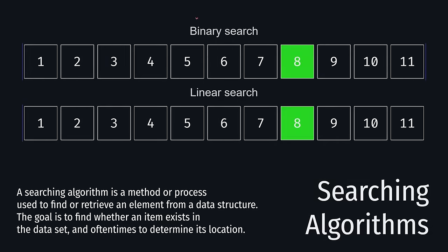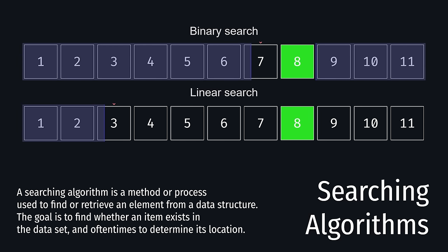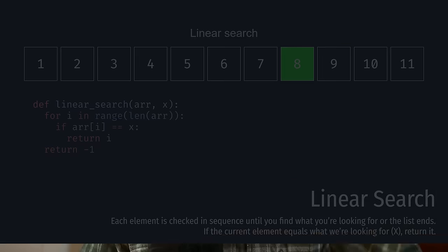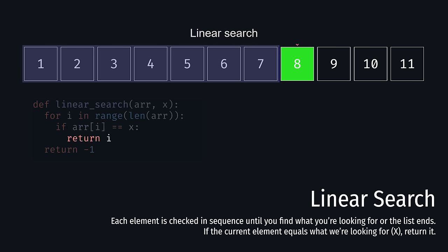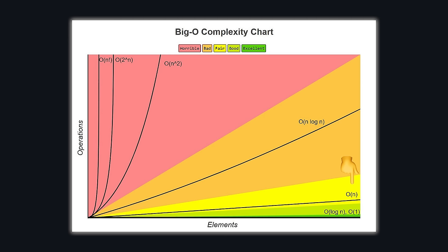Searching algorithms. A searching algorithm is a method or process used to find or retrieve an element from a data structure. The goal is to find whether an item exists in the data set, and oftentimes to determine its location. It's akin to opening the yellow pages to look for a specific phone number — but you have to do it thousands of times, so you better make sure your searching algorithm is correct. One way to do it is via a sequential search algorithm like linear search, which is exactly what it sounds like: each element is checked in sequence until you find what you're looking for or the list ends. The average and worst-case time complexity is O(n), where n is the number of elements in the array — great if the element is in the first index, but not so much if it's the last.